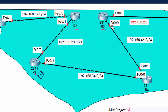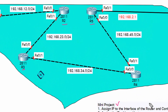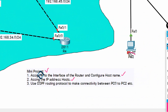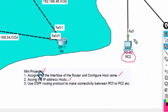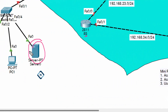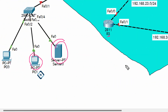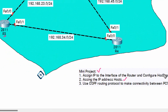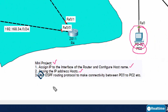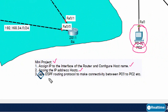We also need to assign IP addresses to the hosts — all the PCs and the server. That is the second activity. For the third activity, we will use the OSPF routing protocol to make connectivity between PC0 and PC2.